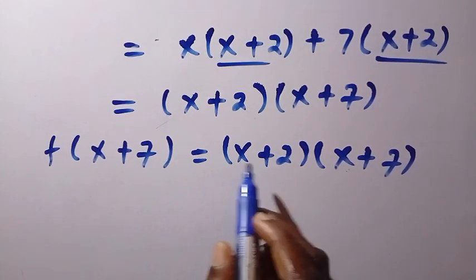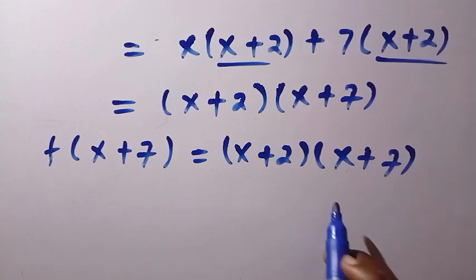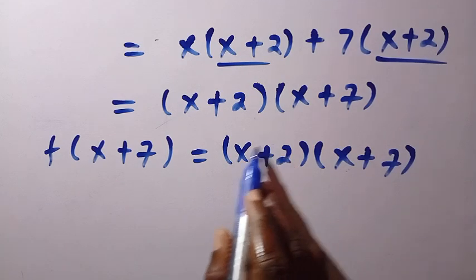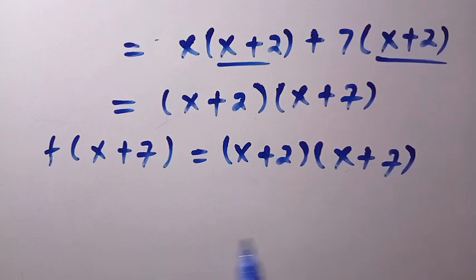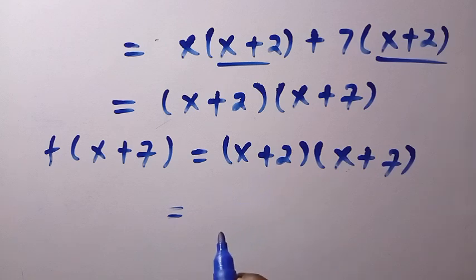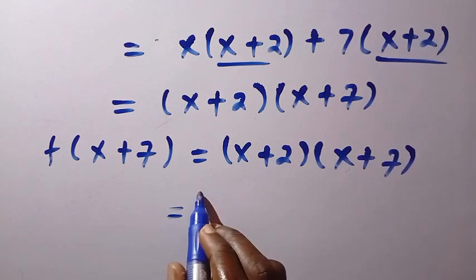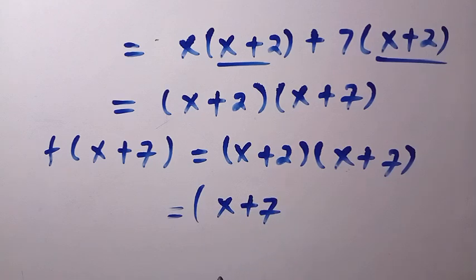Then we have to replace this x plus 7 with only x. But before we do that, this is affected because there is no x plus 7 here. We only have just one x plus 7. And what we have to do is, we are going to manipulate this. By manipulation, we have to take out x plus 7 from here.